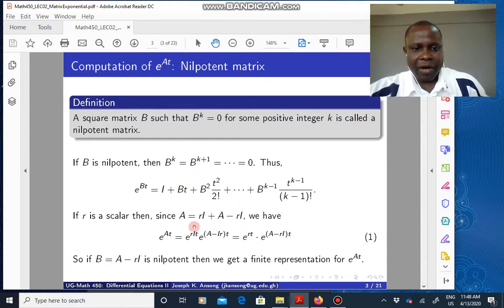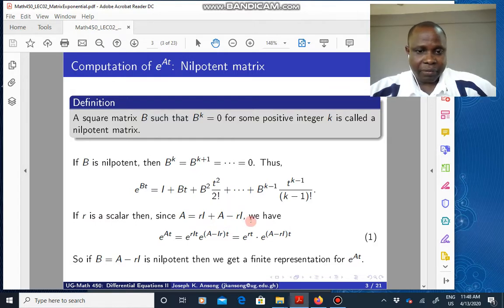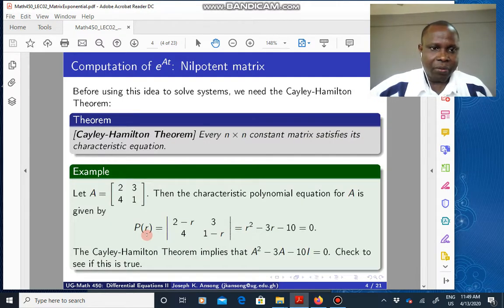Now, if R is a scalar, we can write A to B equal to R I plus A minus R times I. We can expand the matrix exponential e to the AT as this quantity. What it means is that if A minus R I is nilpotent, then this quantity here is truncated. And so it's much easier to compute this. So let's see how we apply it.